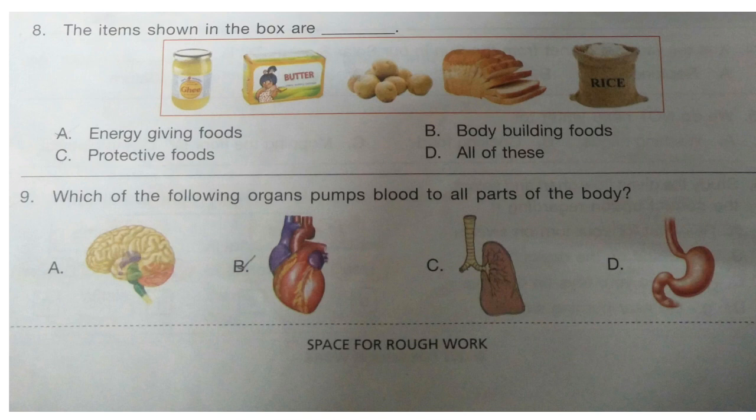Question 8. The items shown in the box are: A. Energy giving foods, B. Body building foods, C. Protective foods, D. All of these.